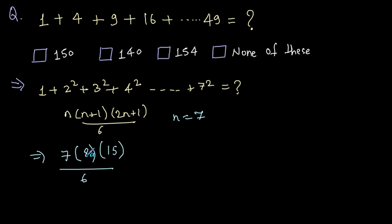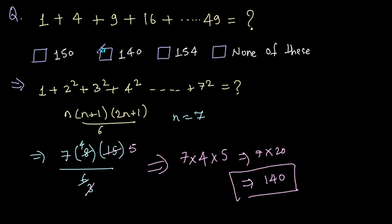Now let's cancel out terms from this expression. We can divide the numerator and denominator by 2. 2×4s are 8 and 2×3s are 6. Now again this 3 can be cancelled out. 3×1s are 3, 3×5s are 15. So this is 7×4×5. 5×4s are 20 into 7, so 7×20. This becomes 140. The answer is the second option, 140.